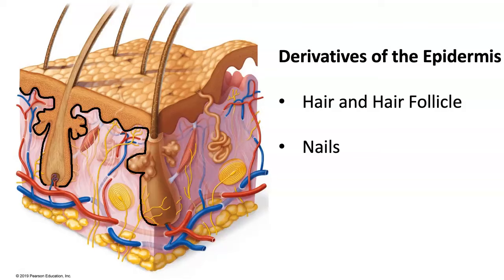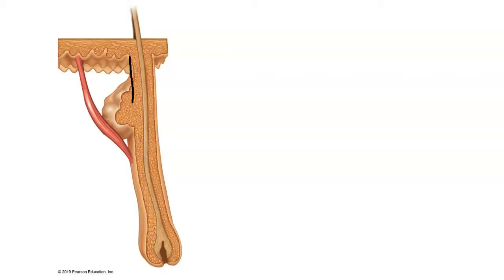These structures — exocrine glands, hair, hair follicle, and nails — all have this in common. What I'm trying to show is that it's actually an extension of the epidermis that is burrowing down into the dermis. That's what's known as a derivative of the epidermis.